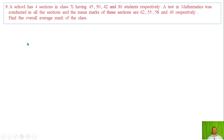Question Number 9: A school has four sections in Class 10 having 45, 50, 42 and 30 students respectively. A test in mathematics was conducted in all sections and the mean marks of these sections are 60, 55, 58 and 49 respectively.